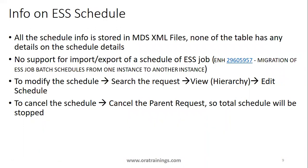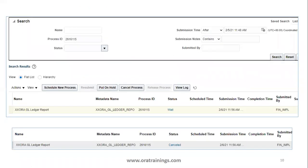Some limitations of ESS scheduling: you cannot find out what frequency was set on a schedule from any table, and there is no flexibility to download or upload schedule information. To modify a schedule, search your job, click Hierarchy, and click Edit Schedule. To cancel a scheduled job, search using the original parent request ID in a flat list view — do not click Hierarchy — select the request ID and click Cancel.